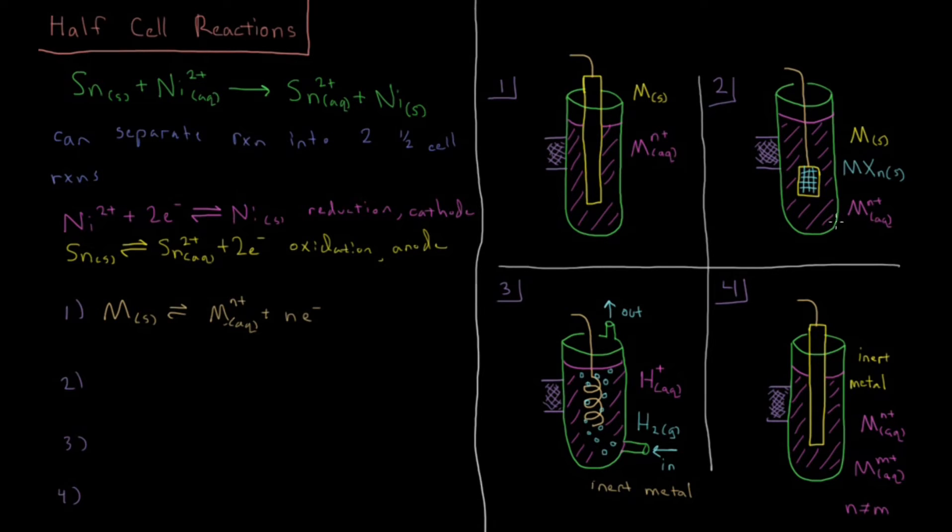And the net half cell reaction which occurs here is going to be the solid metal plus n counter ions. In this case I'm saying that our counter ion just has a charge of minus one, for example like chloride.